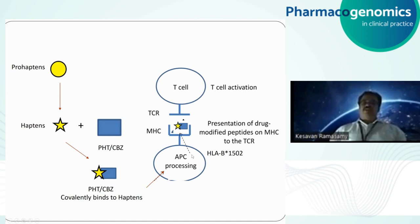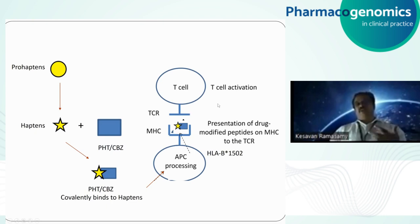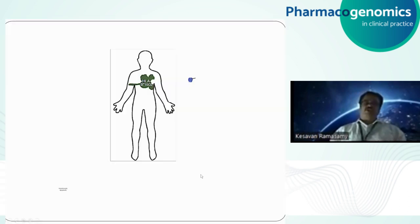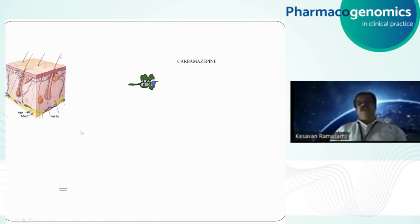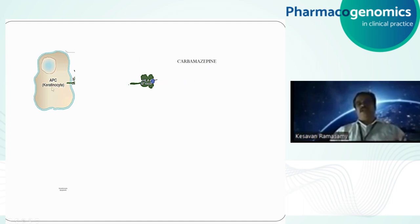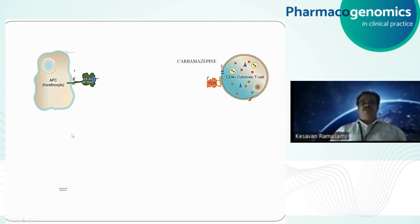Those carrying HLA-B*1502 have this complex initiate T-cell activation — it binds to the T-cell receptor and activates it. Once activated, there is a series of inflammatory cytokine releases from these T cells, causing cytotoxicity. The patient carrying HLA-B*1502 — when the drug carbamazepine or phenytoin is administered — after binding to the hapten, it forms a complex. The antigen-presenting cell here is the keratinocyte, and this complex triggers the attraction of CD8+ cytotoxic T cells present in the dermis.